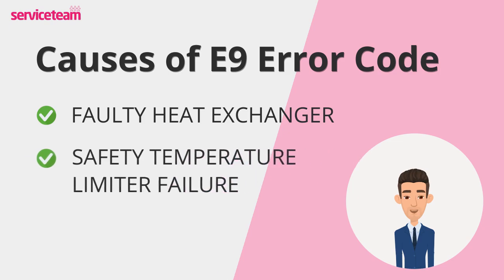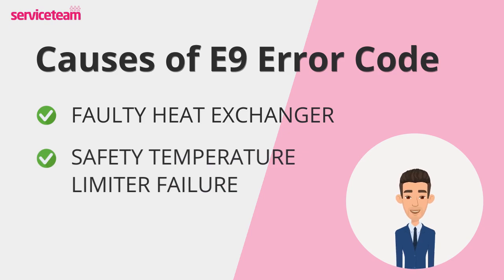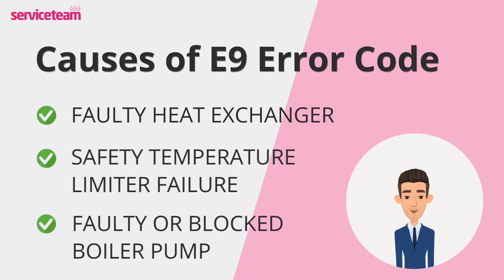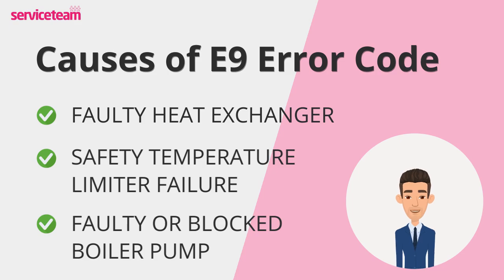Next, we have the safety temperature limiter failure. Faulty sensors, loose wiring, or moisture from internal leaks can cause this device to malfunction, resulting in incorrect temperature readings. Then there's the blocked boiler pump. If it's blocked or damaged, heated water can't circulate properly, leading to overheating. Common culprits are rusty components or sludge buildup in older systems.